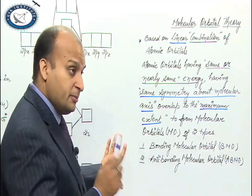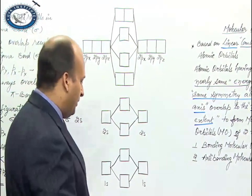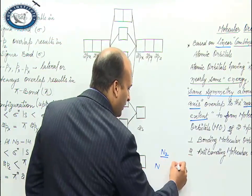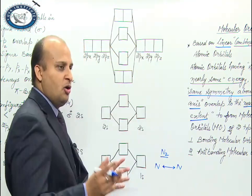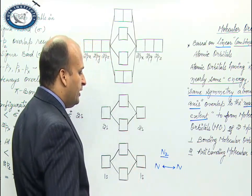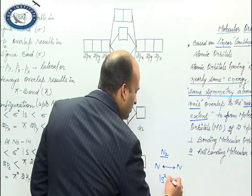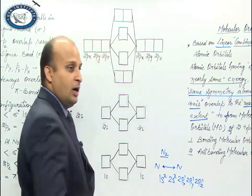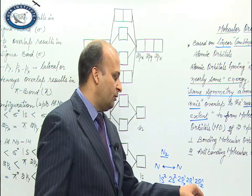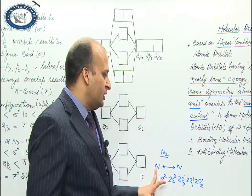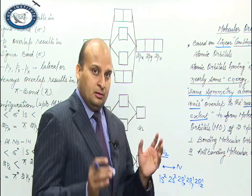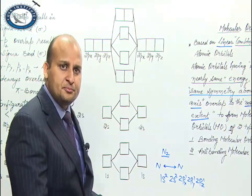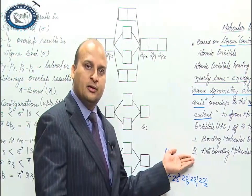Let's understand with an example. Say we have nitrogen molecule N2. The electronic configuration of nitrogen is 1s², 2s², 2px¹, 2py¹, 2pz¹ — a total of 5 atomic orbitals. One nitrogen has 5, the other also has 5. So 5 plus 5 combine to give 10 molecular orbitals: 5 bonding and 5 anti-bonding.